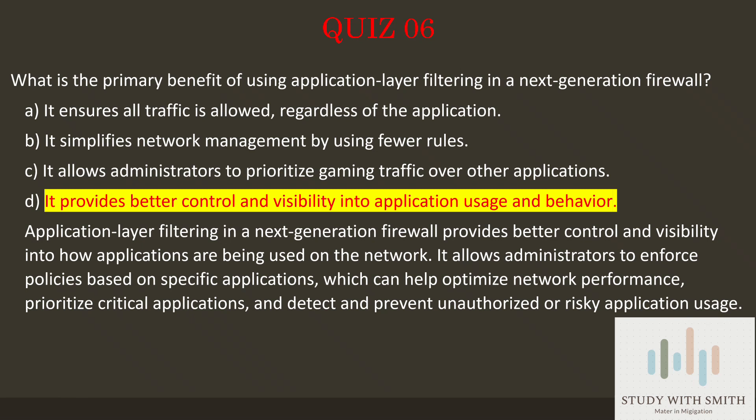Application layer filtering in a next-generation firewall provides better control and visibility into how applications are being used on the network. It allows administrators to enforce policies based on specific applications, which can help optimize network performance, prioritize critical applications, and detect and prevent unauthorized or risky application usage.